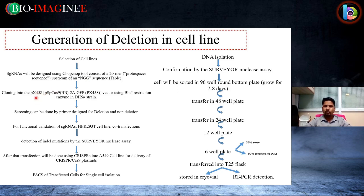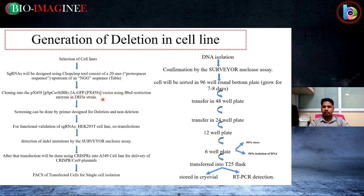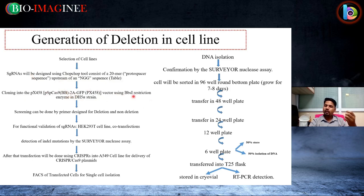Clone the single guide RNA into px458, the chosen vector, which includes a GFP tag useful when using FACS — fluorescence-activated cell sorting. If not using FACS, a puromycin selective marker can be used instead. Cloning is done using BbsI restriction enzyme in DH5-alpha strain. The single guide RNA is inserted into the desired vector using BbsI restriction site and T4 DNA ligase for cloning. After that, go for screening by designing primers for deletion and non-deletion, or by sequencing.